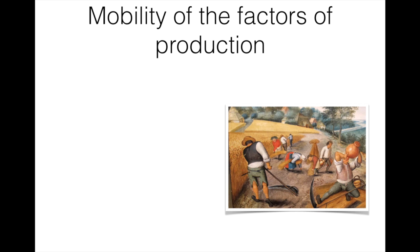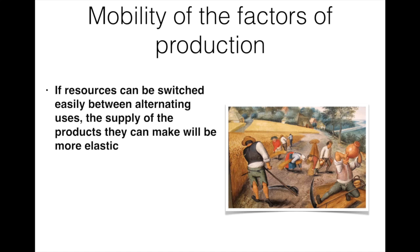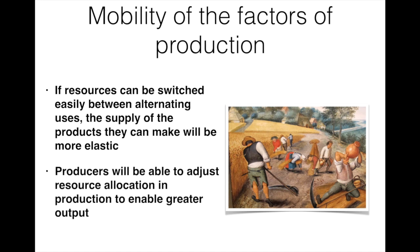Next we should consider the mobility of the factors of production. If the resources used in producing good A are easily transferable to the production of good B, then a rise in the production of good B could be enabled quite easily by switching resources used to produce good A to the production of good B. However, if resources are not easily transferable in production, then supply becomes more difficult to increase and as such is more inelastic.